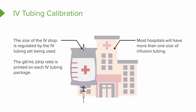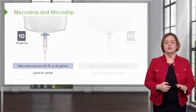The drip rate — see that word GTT — that's drip and that's how we abbreviate it. So when we say a drip rate, we also see GTT. The drips per mil is printed on each IV tubing package.